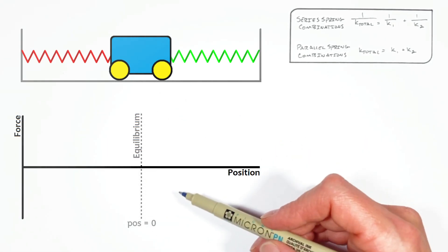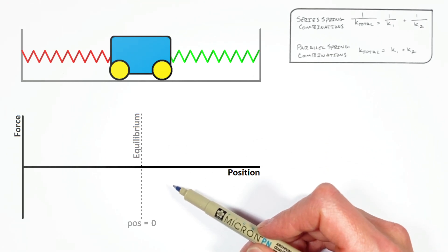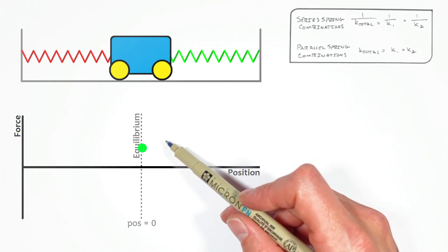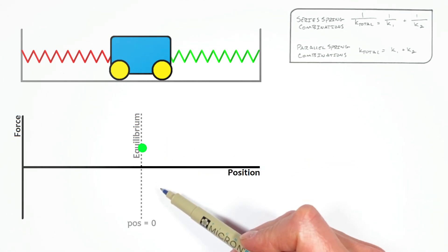And since the block is in fact at equilibrium, that means those two forces must be equal in magnitude. So looking down here on our graph, at equilibrium, we have one spring acting to the right. I'm going to say that's positive. And the other spring acting to the left. So I'm going to say that's negative. But those two magnitudes are the same.